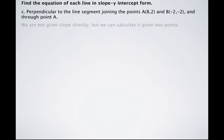We're going to calculate the slope because we're not given the slope directly, but we are given two points. So we're given that x₁ is 8, y₁ is 2.